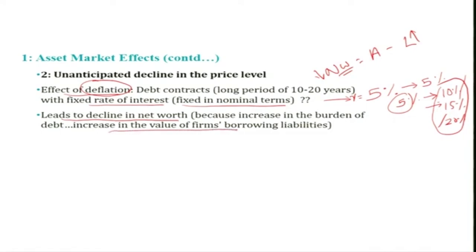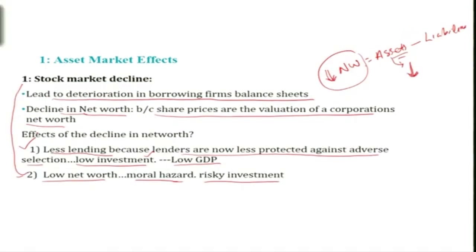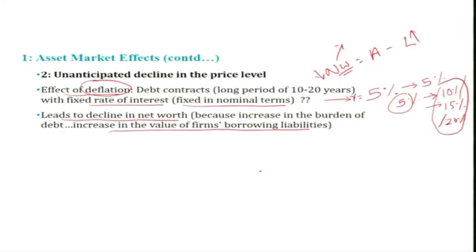This again makes firms vulnerable to adverse selection and moral hazard problems. The declining net worth worsens the asymmetric information problem — the adverse selection problem as discussed in previous sessions. There will be less lending, and it also incentivizes the firms who have borrowed to engage in risky activities.